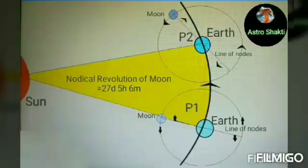But due to precession, the nodes of the Moon are not stationary but move backwards along the Moon's orbit, completing one revolution with respect to the Moon in 18 years and 219 days nearly. This means that with respect to the Moon, its nodes are at the same position every 18 years and 219 days. The Moon revolves in an anti-clockwise direction around the Earth, and the nodes revolve in the clockwise direction.